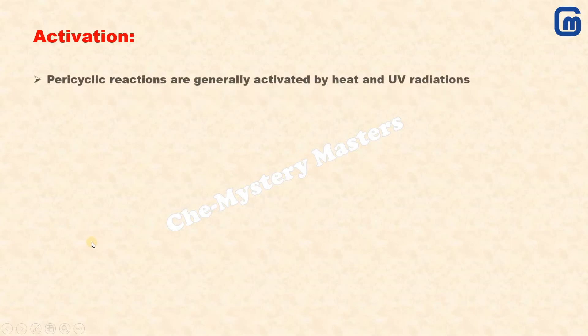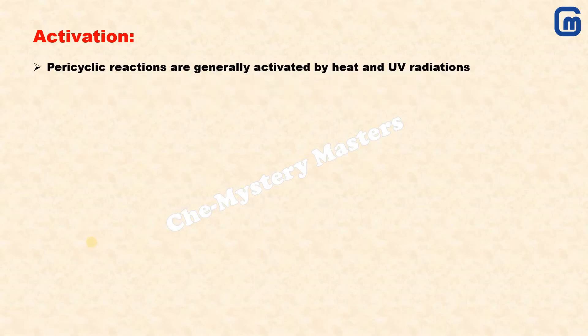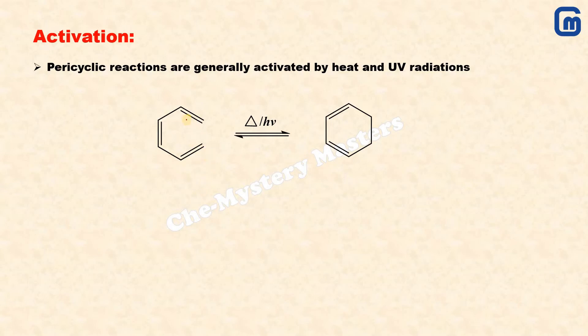The first feature of any pericyclic reaction is activation, which means the excitation of electrons. Just as electrons are responsible for any chemical reaction, in pericyclic reactions the electron excitation from a lower energy level to a higher energy level can be achieved by two ways: the first is by heat, and the second is by UV radiation. Whatever the condition, the electron will be excited to the next energy level.